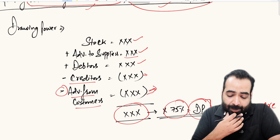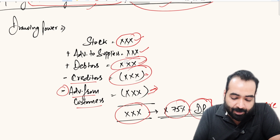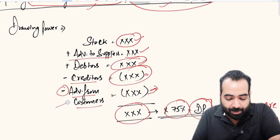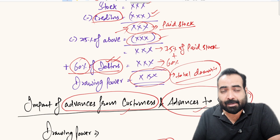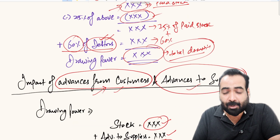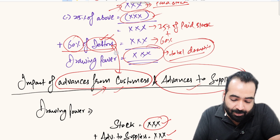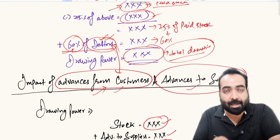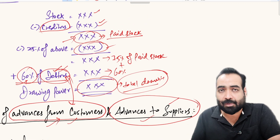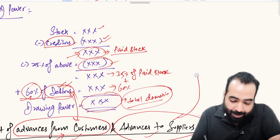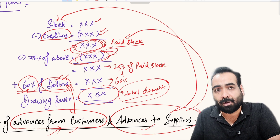If margins are different on paid stock and debtors, and there are also advances to suppliers and advances from customers, the calculation is still straightforward. Debtors and advances from customers are netted against each other and 60 percent of that combined amount is taken. Advances to suppliers are added to paid stock and 25 percent margin is applied accordingly.